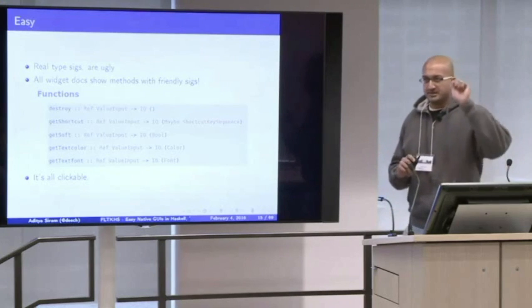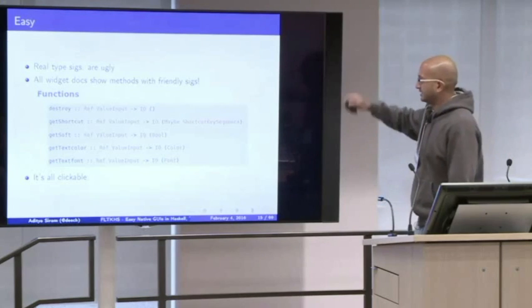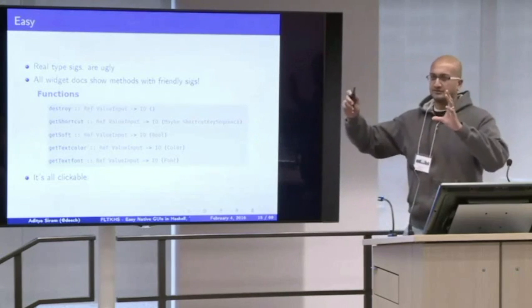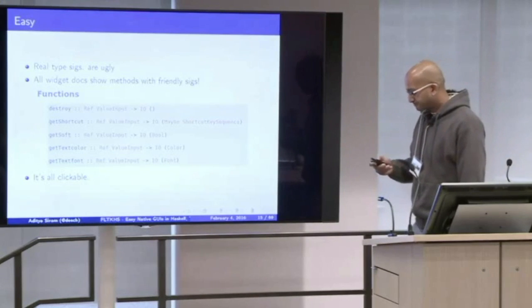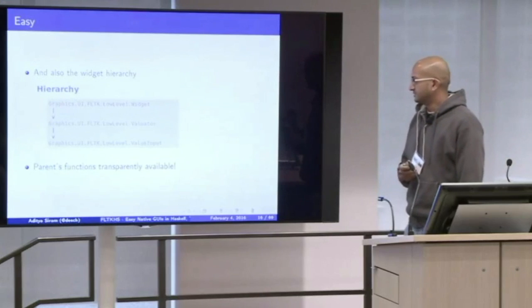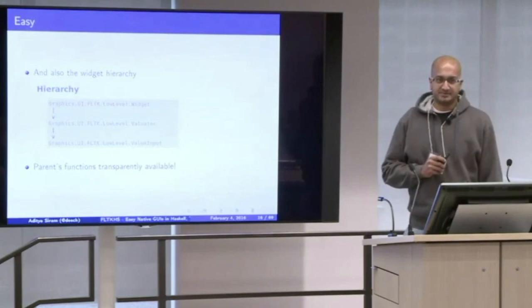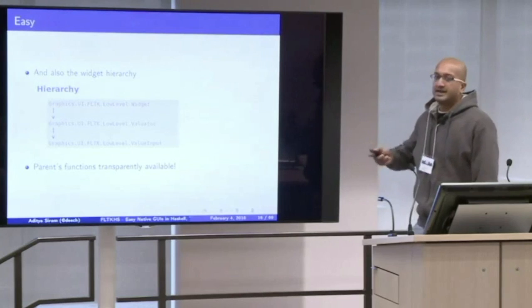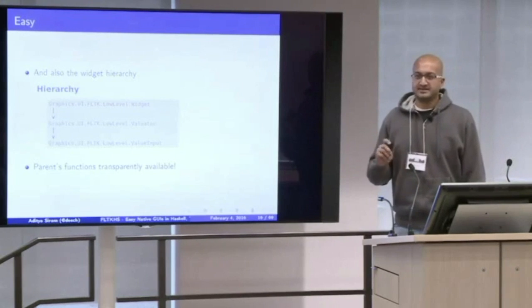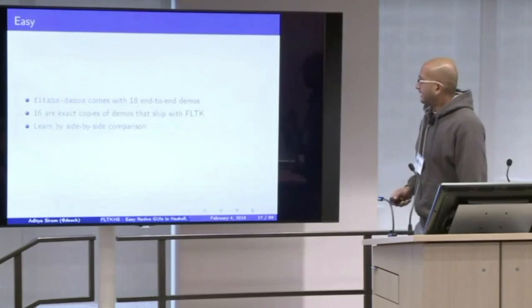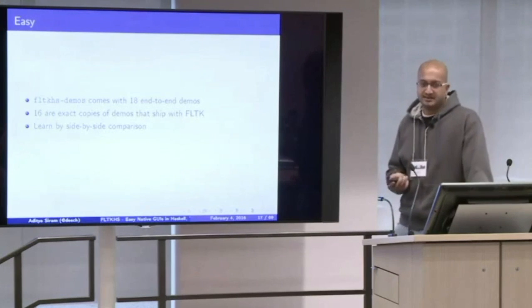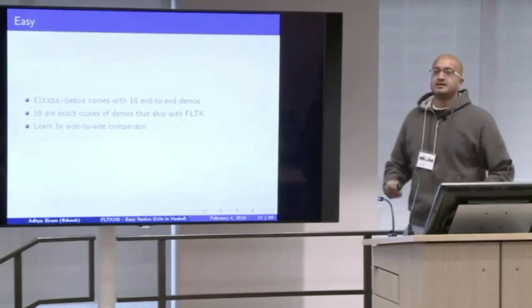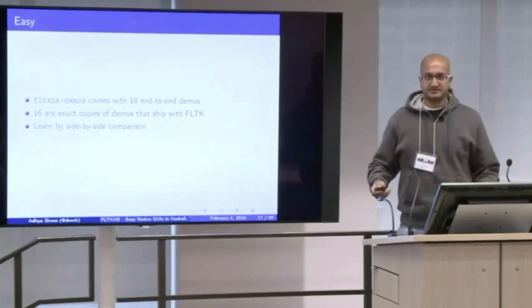But the information is all there if you squint at it correctly. The first thing is saying no function. And the second thing is kind of giving you the name of the function. But that's with a capital S as opposed to a lowercase. So sorry, that's the best I could do. I'm hoping that GHC 8's custom type errors will allow me to give you a better error message down the road. But for now, this is what I have. So as I said, the real type signatures are ugly from the point of view of users, right? You don't want to see that stuff. So all of the haddock documentation for each widget has a listing of all of the functions that it supports with the nice synthetic type signature. And it's all clickable. So if you click on a widget on the Hackage page or something like that, it'll show you everything that it supports. Additionally, all of the widgets have their hierarchy, a little diagram of their hierarchy on all of their haddock pages. And also, I have a demo package that has about 18 demos end to end. And 16 of them are exact copies of what comes with FLTK.